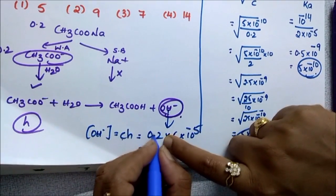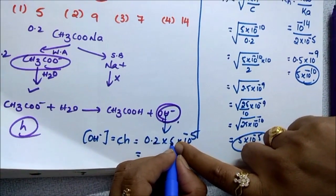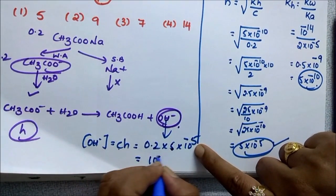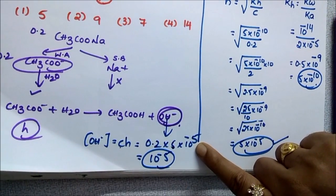Then it will be, you can write 2 by 10, 2 into 5, 10 by 10 gets cancelled. You are left with 10 power of minus 5.